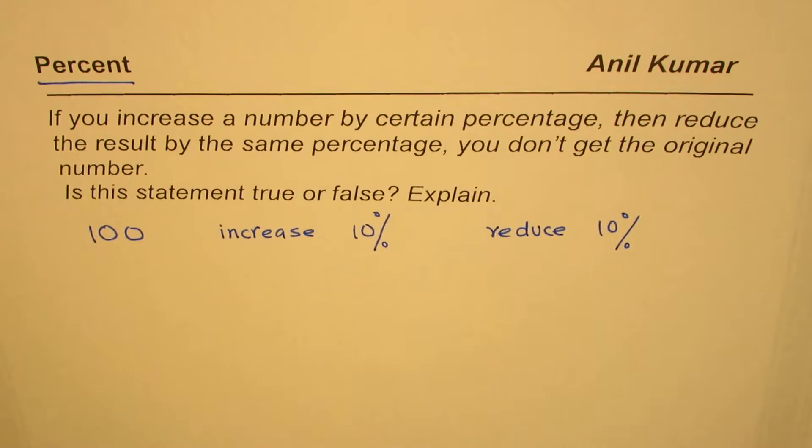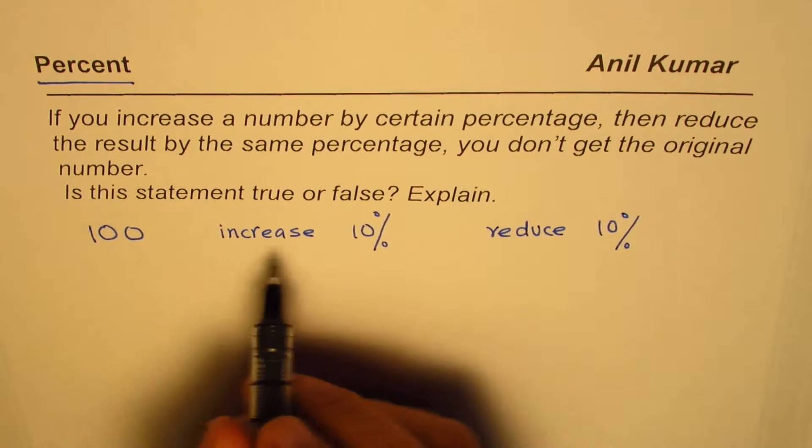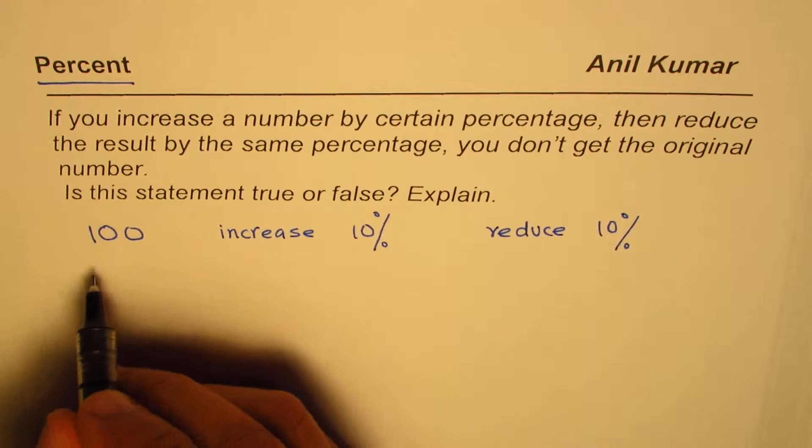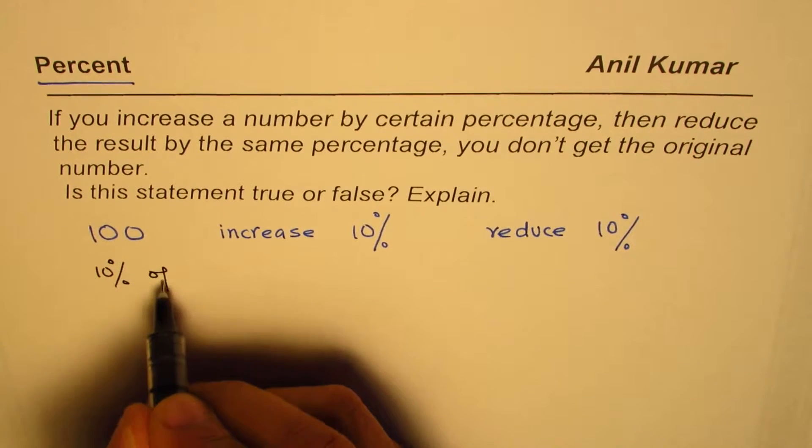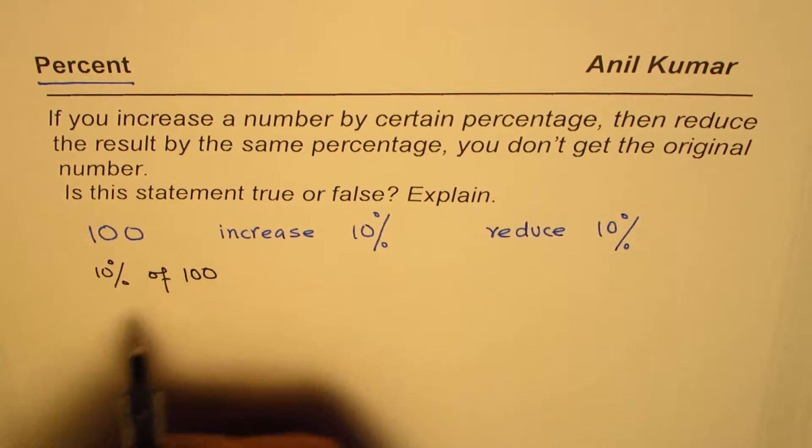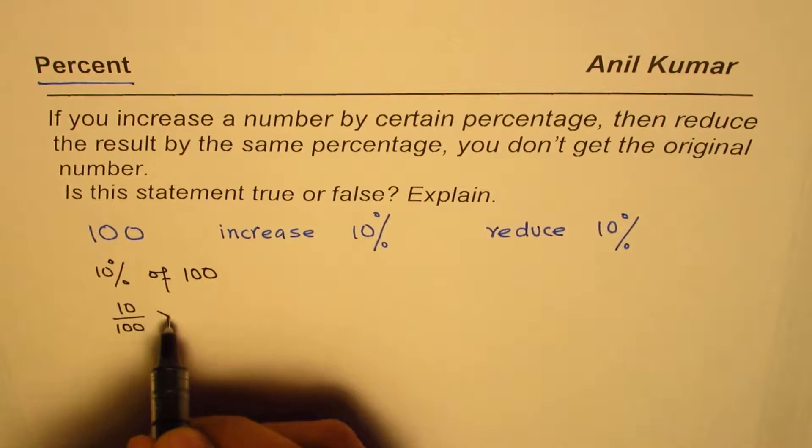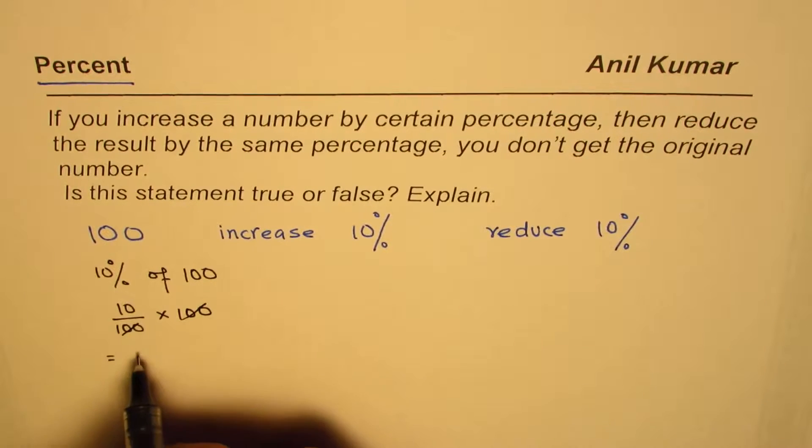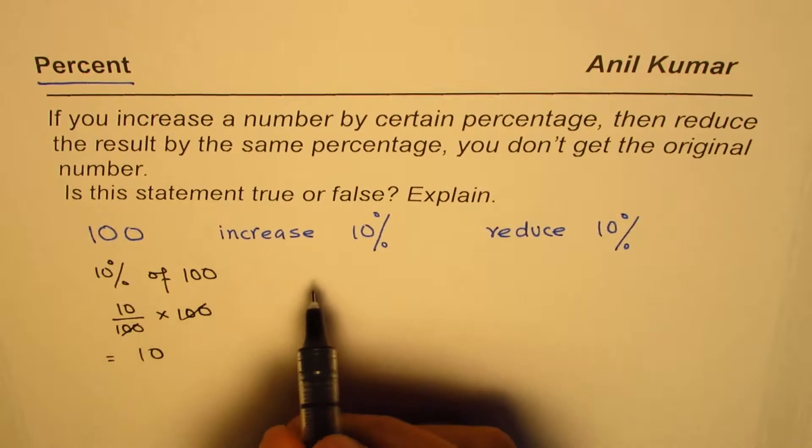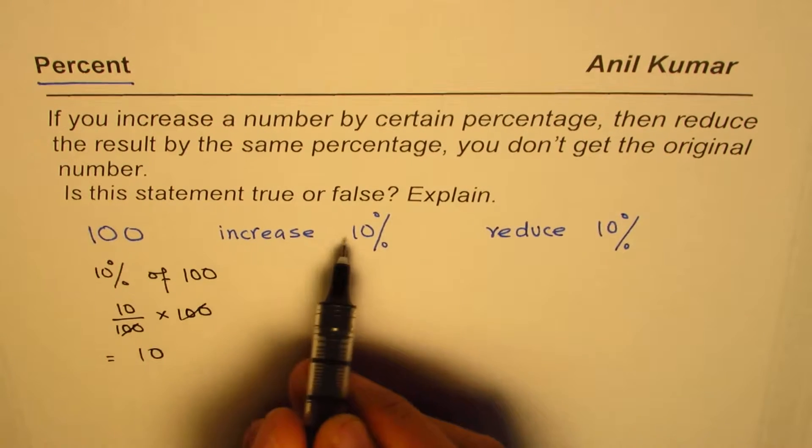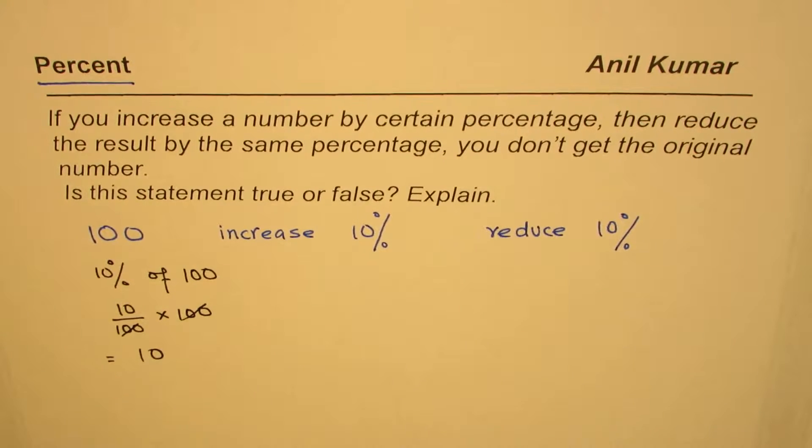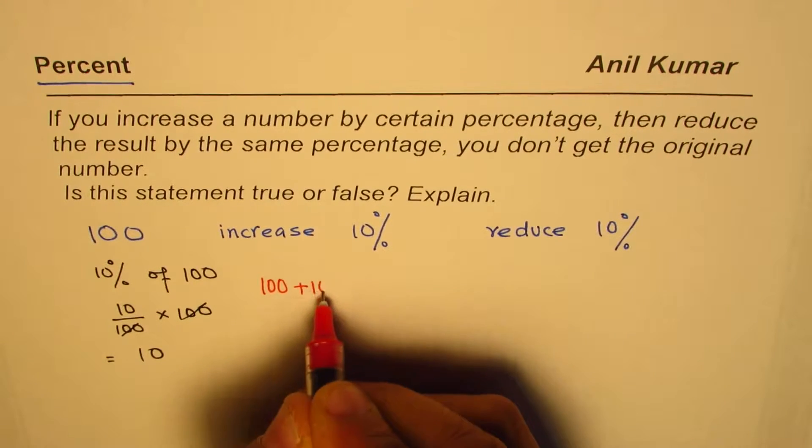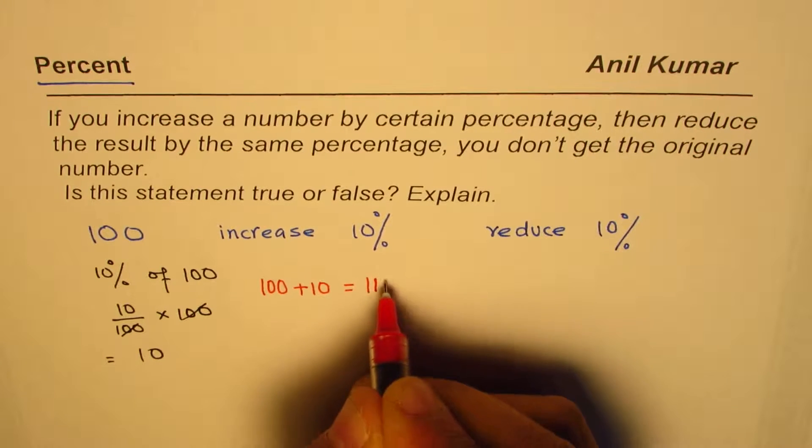If I have 100, increase by 10 percent, that means 10 percent of 100, so 10/100 times 100, and that is equal to 10. If I increase 100 by 10 percent, then I'm getting 100 plus this 10, which is 110.